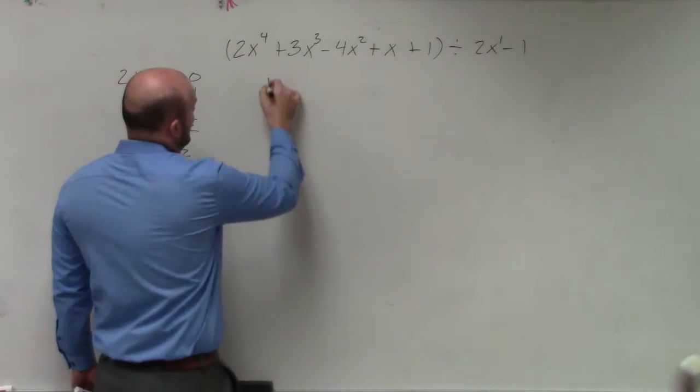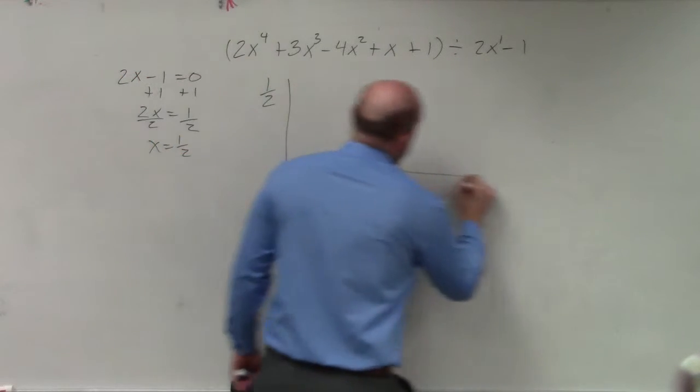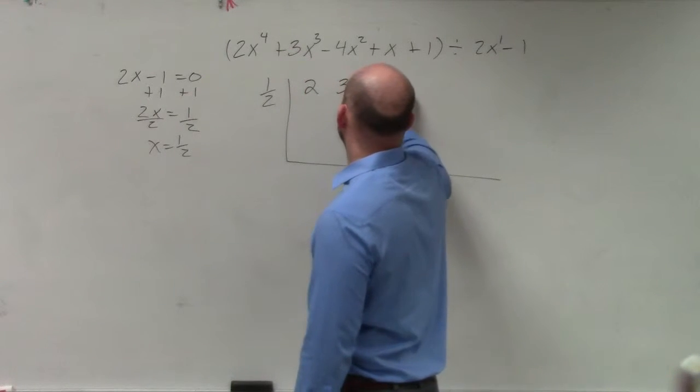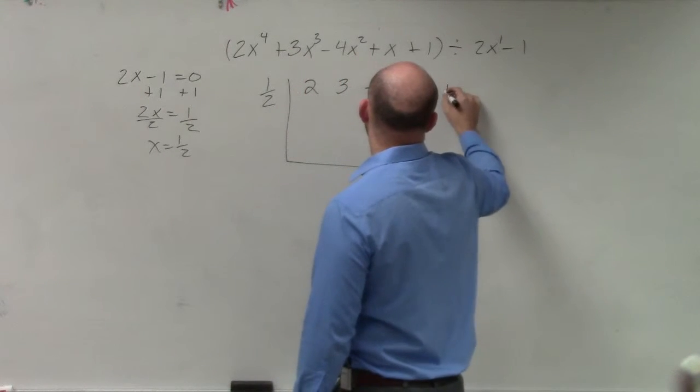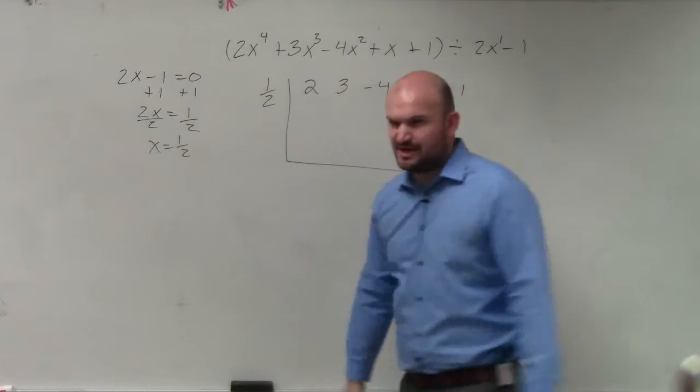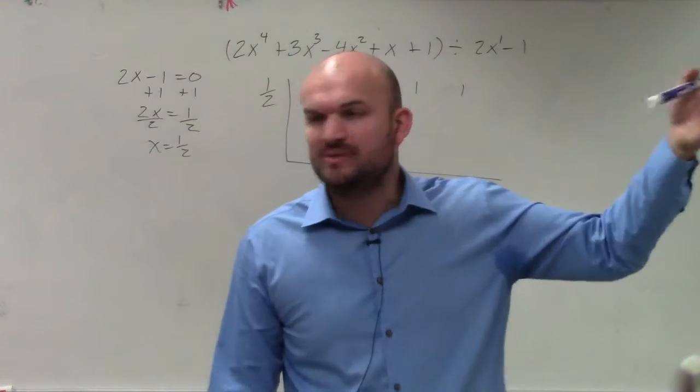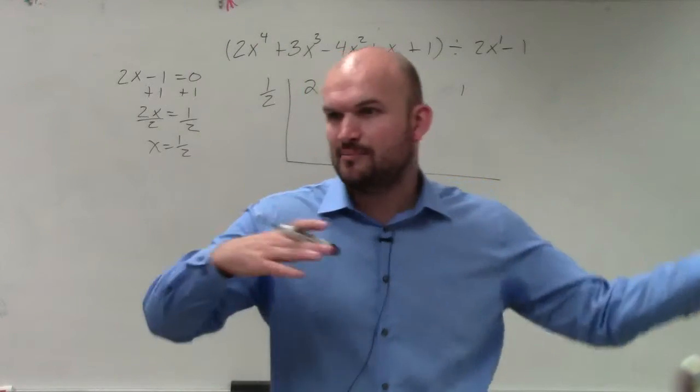So now I have 1 half, and then I take my coefficients. So I have 2, 3, negative 4, 1, and positive 1. Did everybody see how I didn't need to include zeros? Because I have it in standard form, and there's no missing values. You see how that compares to the last problem?